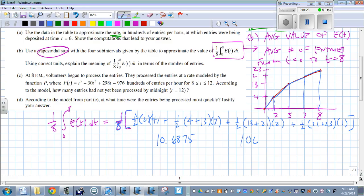So we can write 106.875 hundreds, but I would just go ahead and move the decimal place over two places. So, 1,068.75 entries. And remember, we already explained that's the average number of entries from t equals 0 to t equals 8.